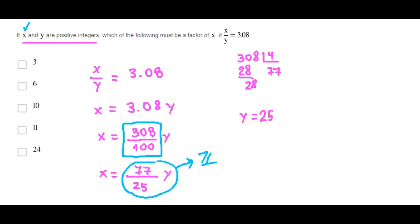Because if Y is 25, then we have something like this - I can cancel this one and this one, and we get an integer for X. So since the least value of Y is 25, the least value of X is 77.